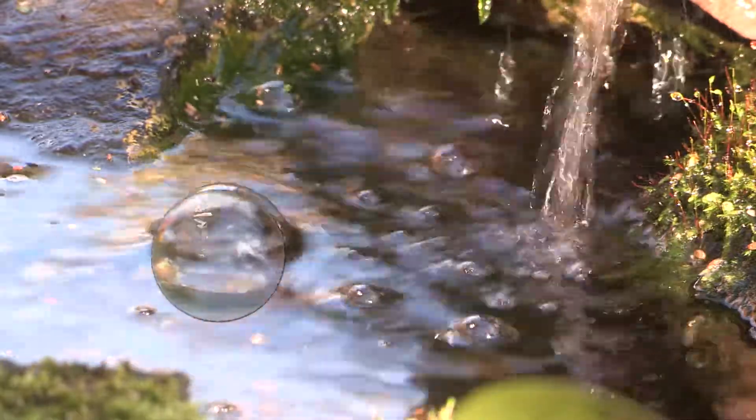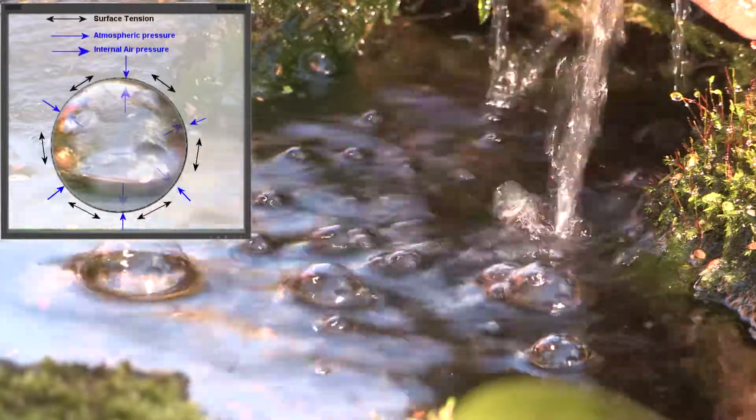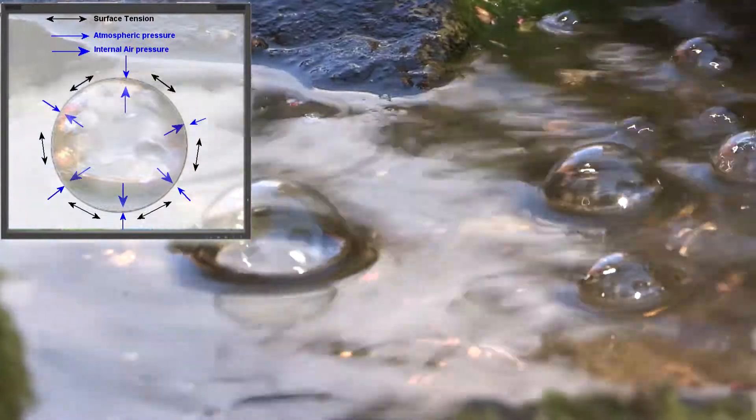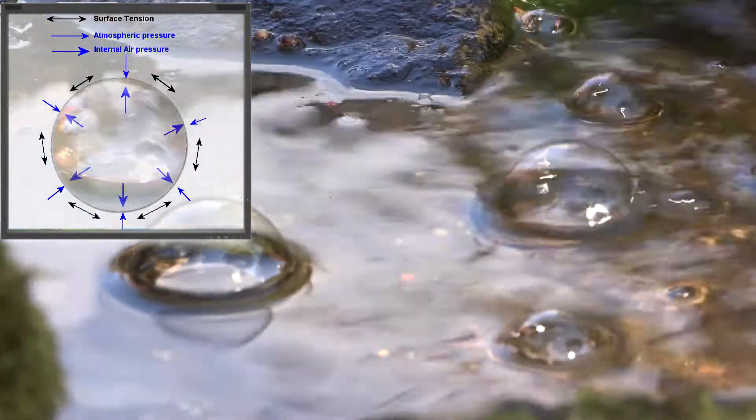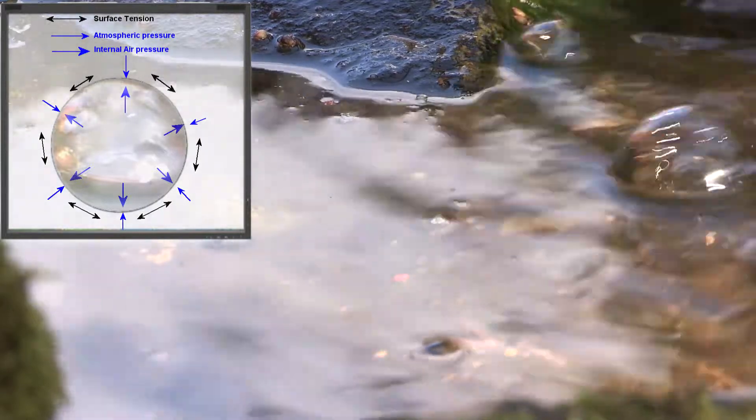A bubble floating freely in air takes on the shape of a perfect sphere. Because the internal pressure is higher than the external atmospheric pressure, this forces the bubble to expand. But the surface tension, acting like an elastic band, is trying to stop it expanding.